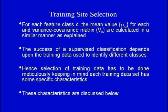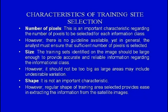These characteristics include: number of pixels — there is no fixed guideline, but the analyst must ensure sufficient pixels are selected; size — training sites should be large enough to provide accurate and reliable information but not so large as to include undesirable variation; and shape — regular shape of training areas provides ease in extracting information from satellite images.